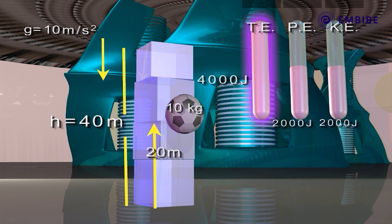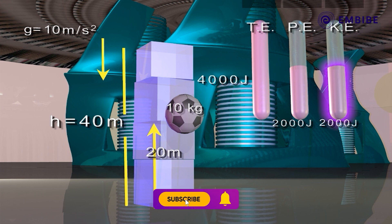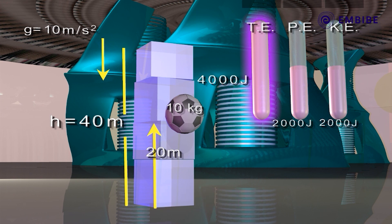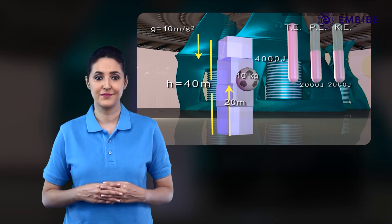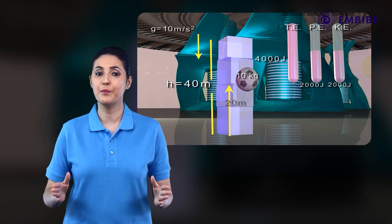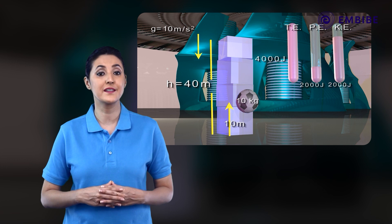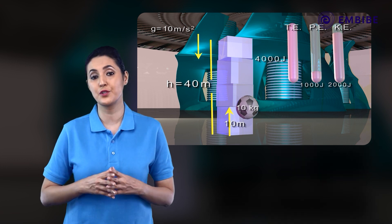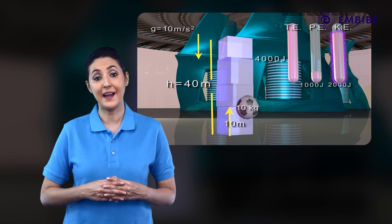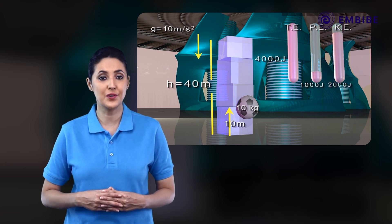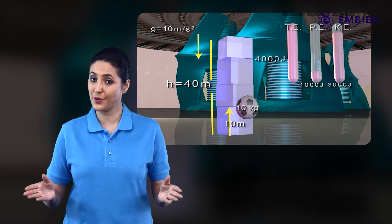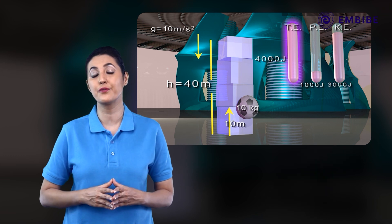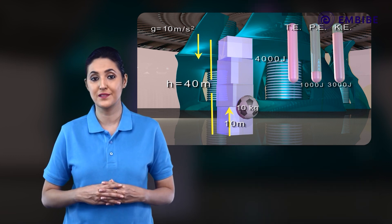So, total energy associated with the body is kinetic energy plus potential energy, that is 4,000 joules. Similarly, when the body is at 10 meters height, it has potential energy of 1,000 joules and kinetic energy of 3,000 joules, giving a total energy of 4,000 joules.